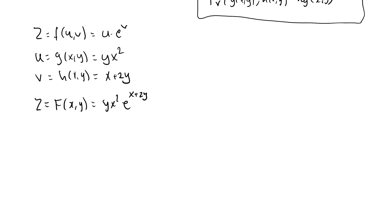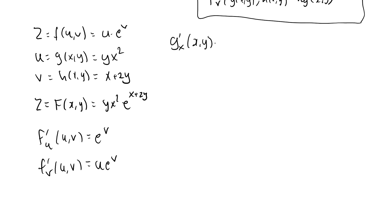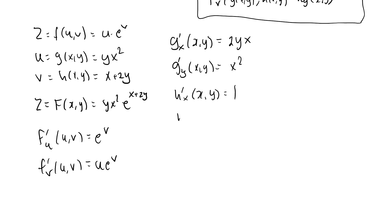Before applying the chain rule, let's compute all the partial derivatives. f prime u of (u,v) is e to the v. f prime v of (u,v) is u times e to the v. g prime x of (x,y) is 2yx. g prime y of (x,y) is x squared. h prime x of (x,y) is 1. And h prime y of (x,y) is 2.